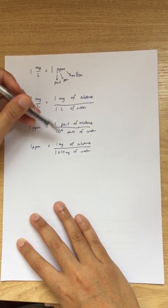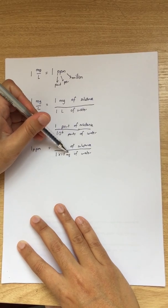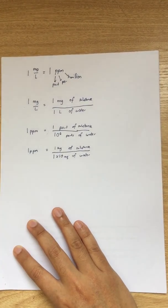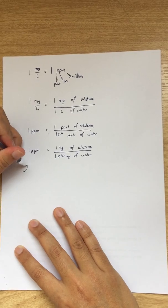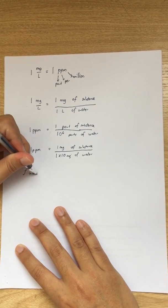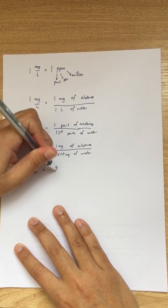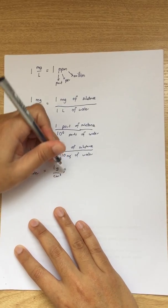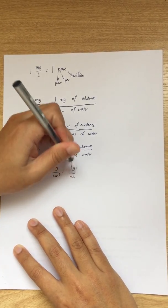If we have milligram at the numerator, we must also have milligram at the denominator. Now, bear in mind that the density of water is actually one gram per centimeter cube, and this is equivalent to one gram per milliliter.